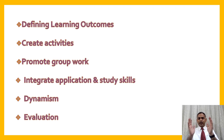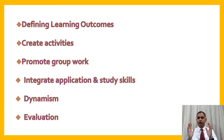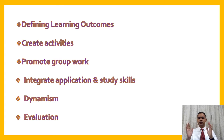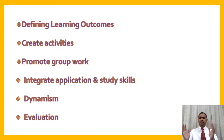Now let us look at the process for peer-assisted learning. First, you need to identify what are the learning outcomes you are expecting from any particular PAL session you are going to implement with your students. At the end of this session, the student should be able to do this or understand this. That is your basic learning outcome — it has to be defined first. Based on the objectives or outcomes, you need to define or create different activities.